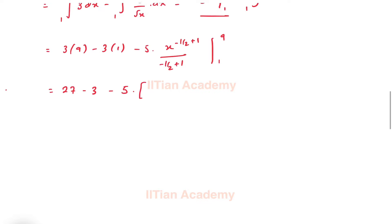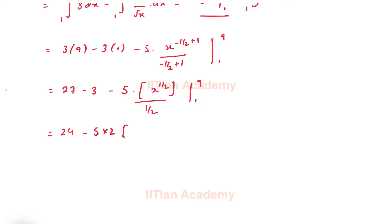We can further simplify: 27 minus 3, this is minus 5 into x raised to the power half divided by 1 by 2, with limits ranging from 1 to 9. So this is nothing but 24, minus 5 into 2, and x raised to the power half with limits from 1 to 9.